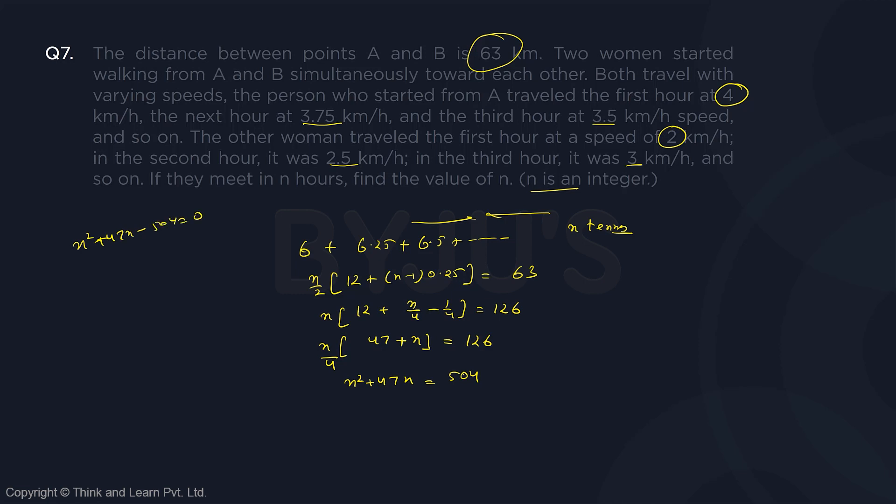Now, it is a theta question, so otherwise if there had been options, I can put the option here. But because it is a theta question, I need to solve it. I need to find two factors of 504 whose sum is 47. You need to do hit and trial.